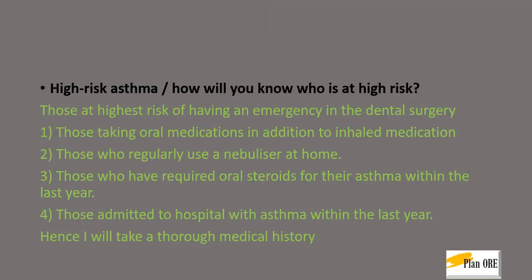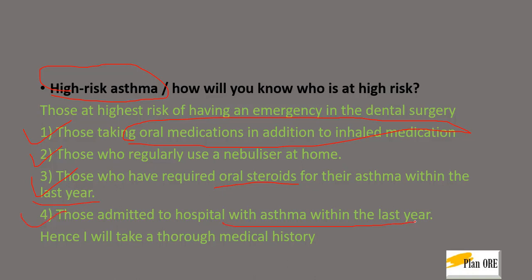Which patients do you consider at high risk for an asthmatic attack? The highest risk patients are: those taking oral medications in addition to inhaled medications; those using a nebulizer at home; those who have used steroids in the last year; or those who have been admitted to hospital with asthma in the last year. These are the four points to remember for high-risk asthma. You will take a proper medical history and analyze whether the patient is at high risk or not.